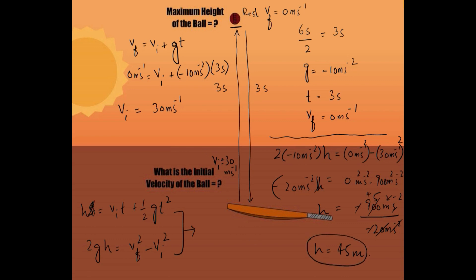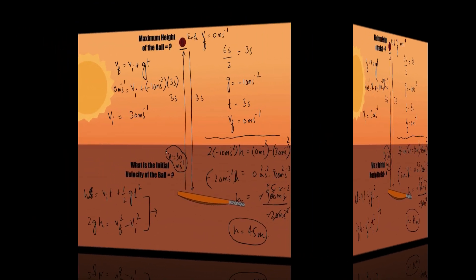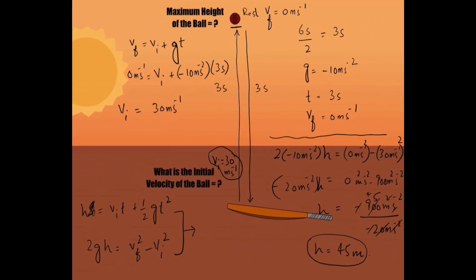The maximum height the ball attained is 45 meters, and the initial velocity with which the ball was hit vertically upward is 30 meters per second. That's all about this numerical. If you understand this problem, please share, like, and subscribe to the channel. Thank you very much.